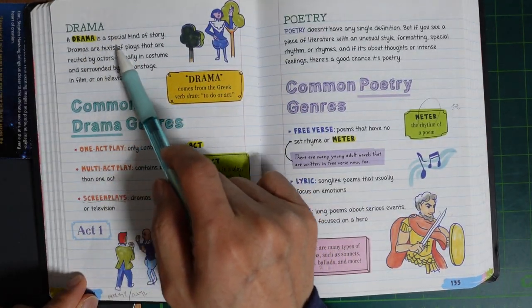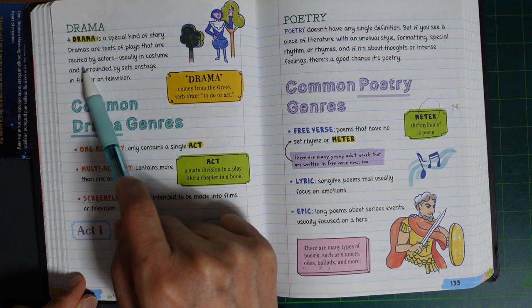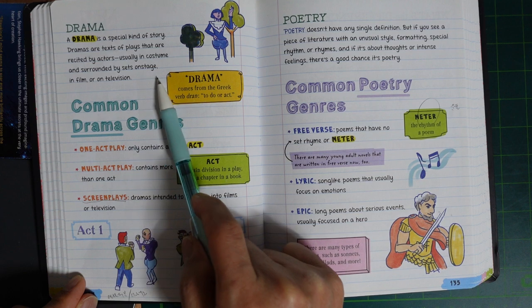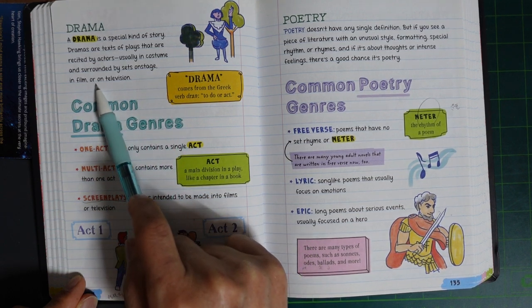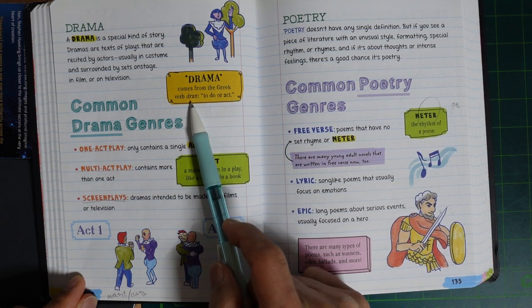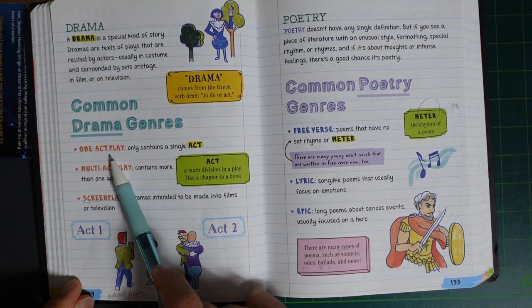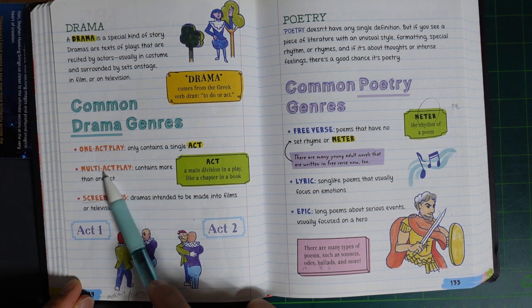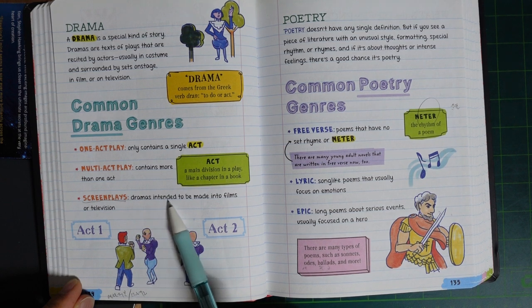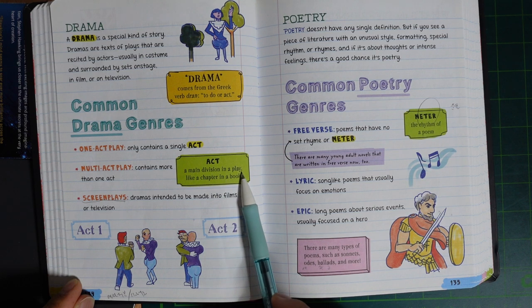Drama. Drama is a special kind of story. Drama is text of a play, acted by actors, usually in costume and surrounded by a set on stage, in film, or on television. Drama comes from a Greek verb meaning to do or act. Common drama genres: One-act play—contains a single act. Multi-act play—contains more than one act. Screenplays—drama intended to be made into films or television. Act—a main division in a play, like a chapter in a book. Act 1, Act 2.